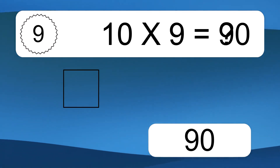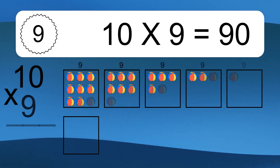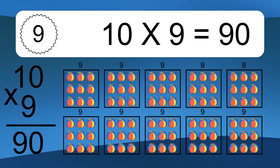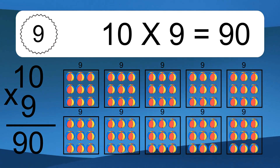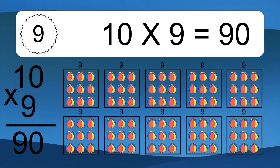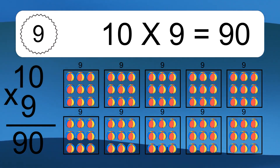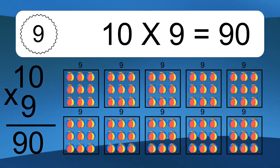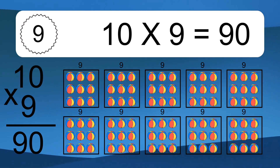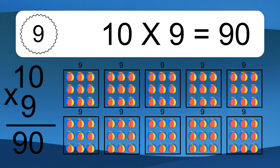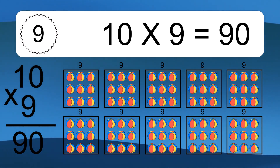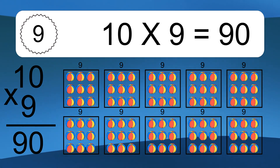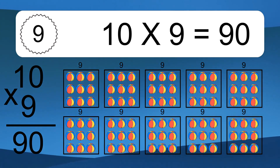10 times 9 equals 90. We have 10 boxes, and each box has 9 colorful balls inside. If you count all the balls in all the boxes together, you will have 10 times 9 balls. This equals 90 balls.